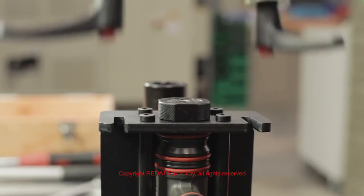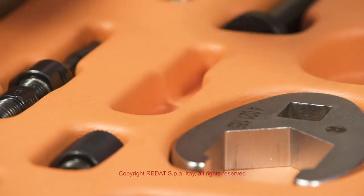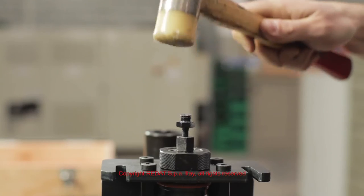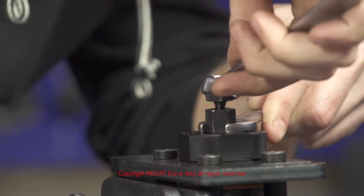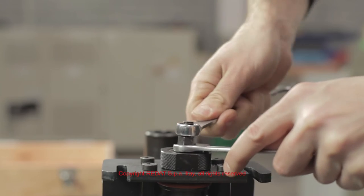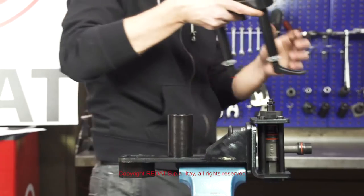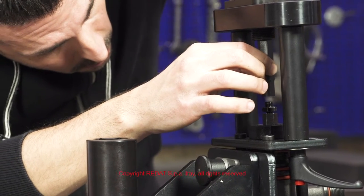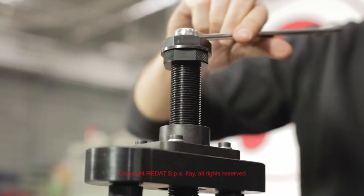We temporarily remove the detachable part of the equipment so that we can correctly insert the bush extractor. Then we reinstall the detachable part and with the same procedure remove the bush.